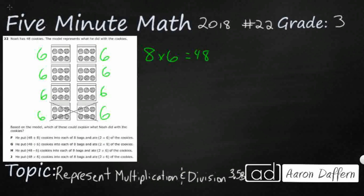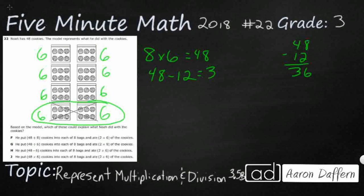Then we did something down here — it looks like we got rid of some, maybe we took those away. So we've got six and six, meaning we did our 48 and we took away 12. Let's see: 48 minus 12 is going to be 36, or less. Something happened to those bottom two bags.